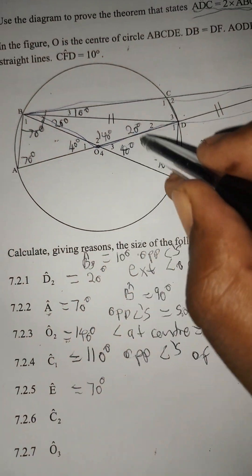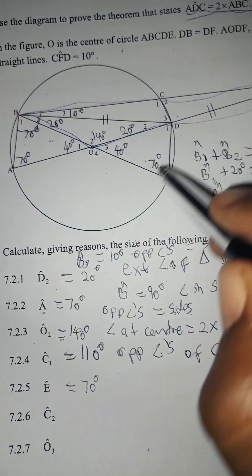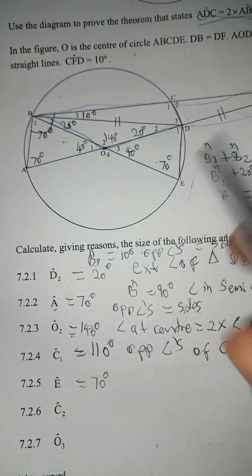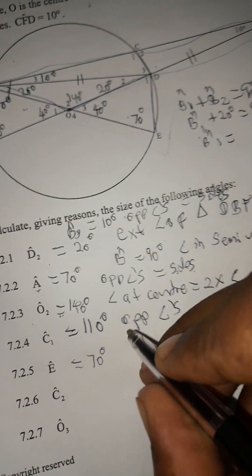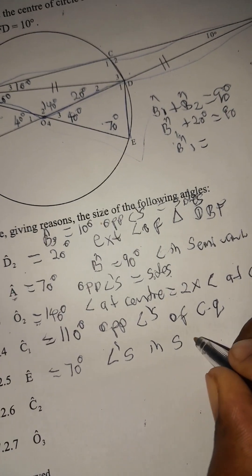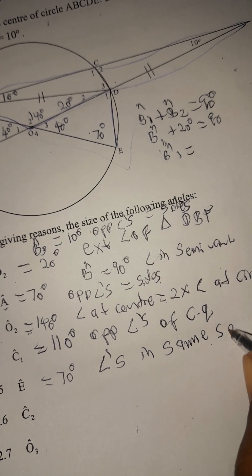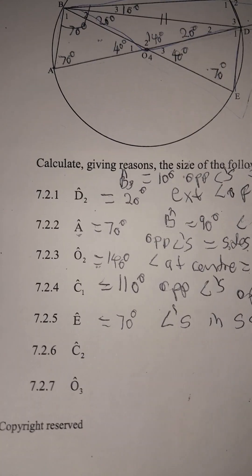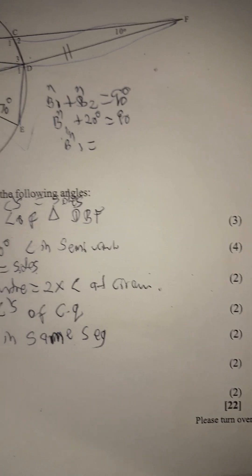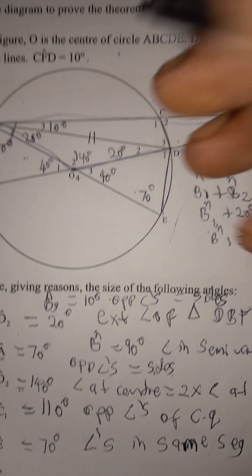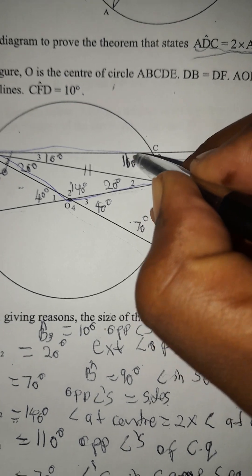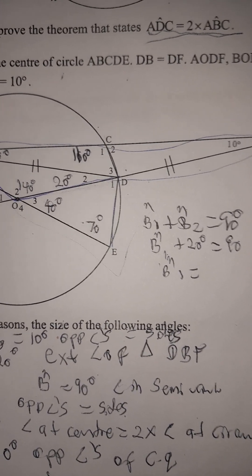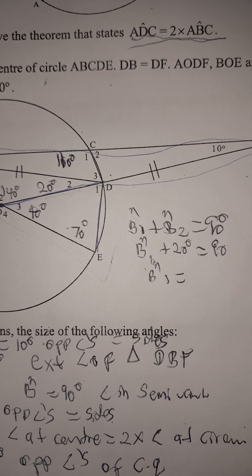For angle E: since this is a cyclic quad, it forms a bowtie. We can see a bowtie theorem here, meaning angle A equals angle E — angles in the same segment. That is two marks.